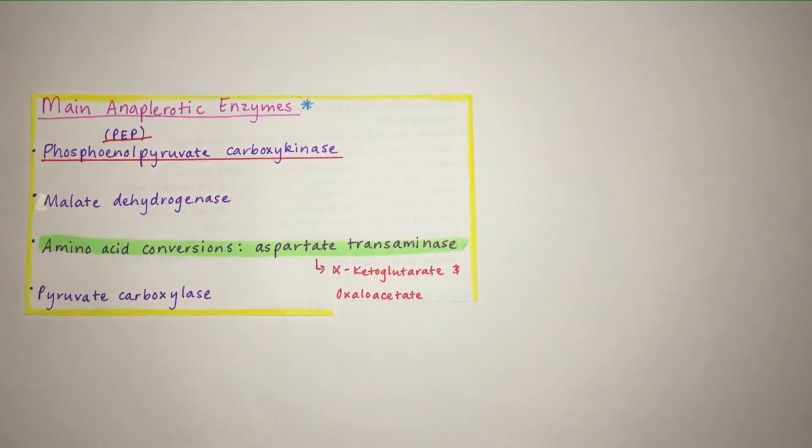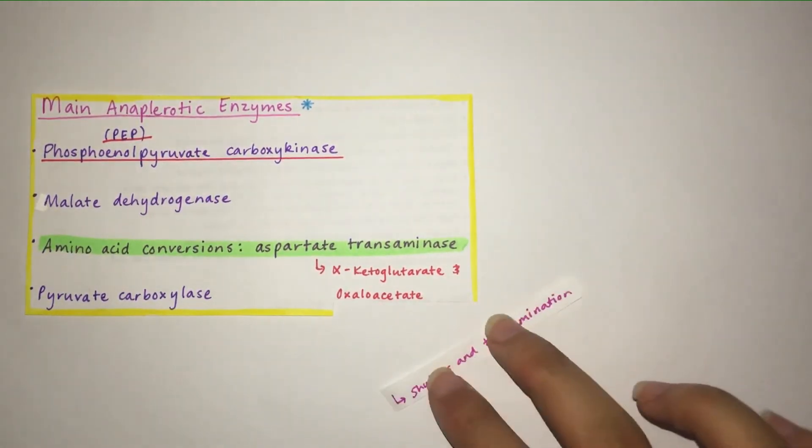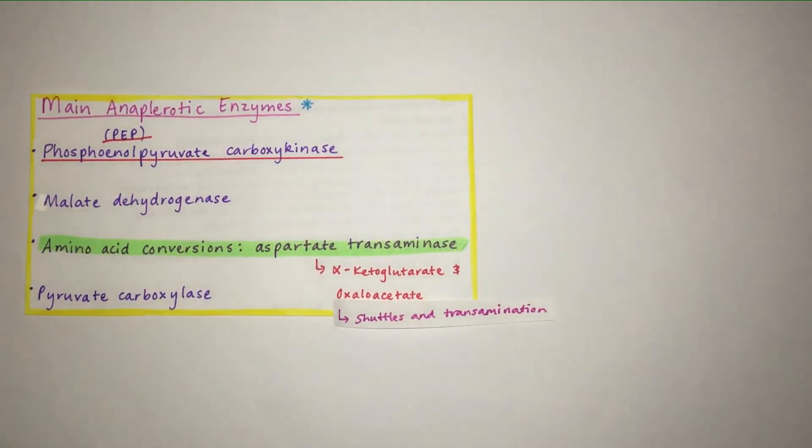Through amino acid conversions, the enzyme aspartate transaminase is also important for bringing in intermediates into the TCA cycle. If you know your transaminase reactions and your shuttles well, this will make sense, because this is how we can get oxaloacetate entering the TCA cycle through transaminase reactions, in particular the enzyme aspartate transaminase.